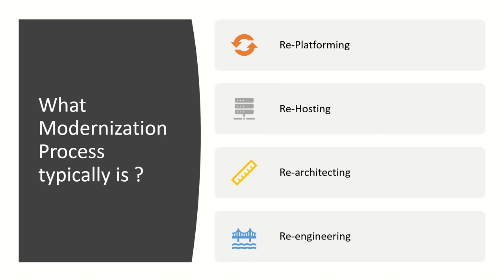Re-architecting involves changing the underlying architecture of the legacy system to improve the performance, scalability, and security of the technology infrastructure. This can include upgrading the hardware, adopting new software technologies, and modernizing data structures. Re-engineering is a more comprehensive strategy that involves making significant changes to the existing system, including the software, data structures, and architecture. This strategy is typically used when an organization wants to fundamentally transform the way its system works in order to take advantage of new technology capabilities.